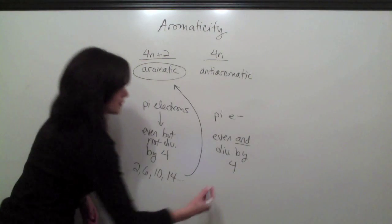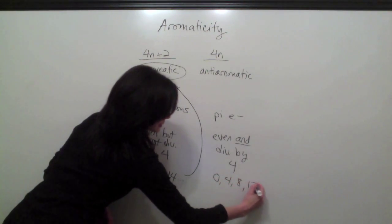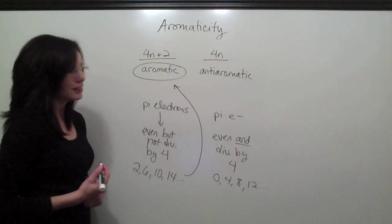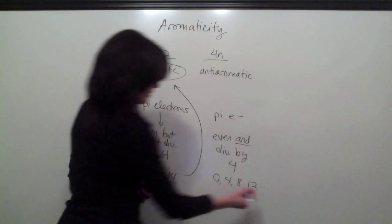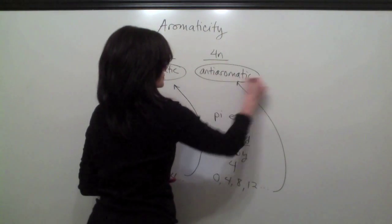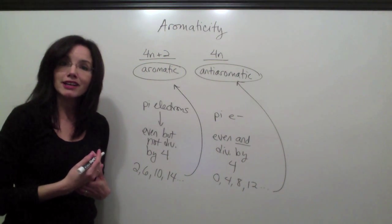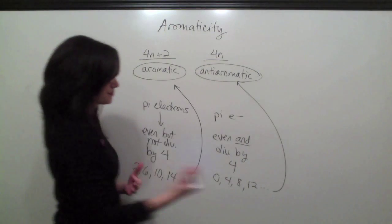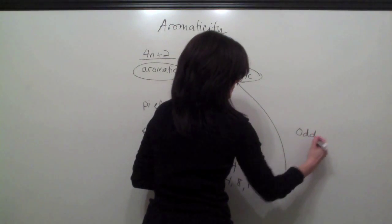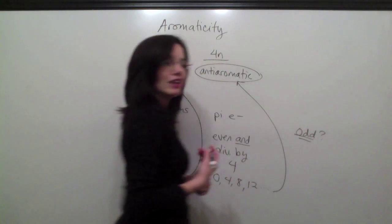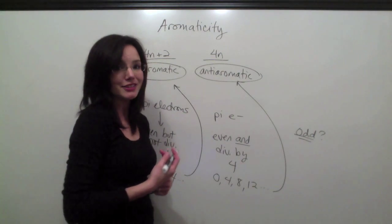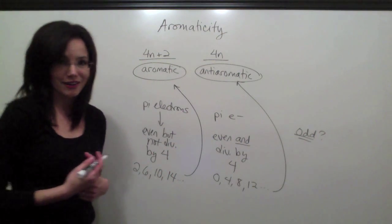And if you look at your number of pi electrons and it's even and divisible by 4, for example, 0, 4, 8, 12, then you have an anti-aromatic compound. And there are going to be rare cases when you count up your number of pi electrons and they're going to be odd. When you have an odd number of pi electrons, that lets you know that your compound is non-aromatic.